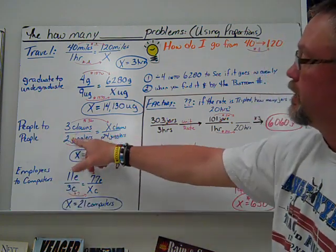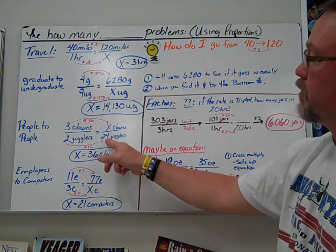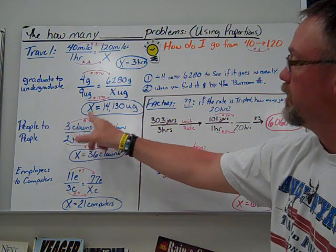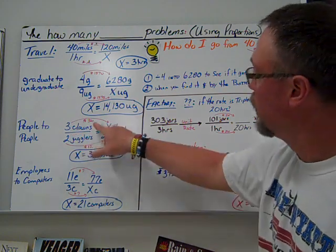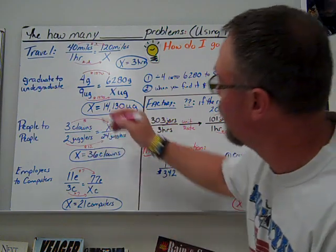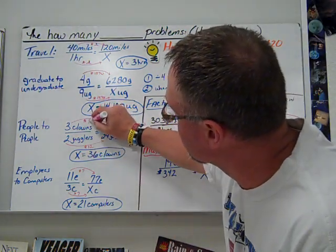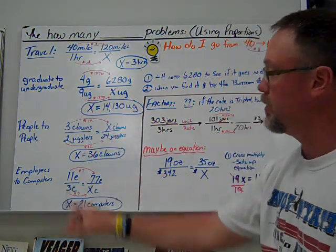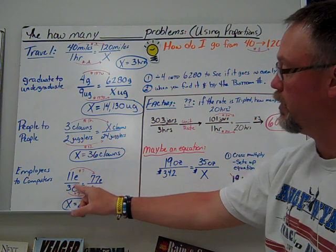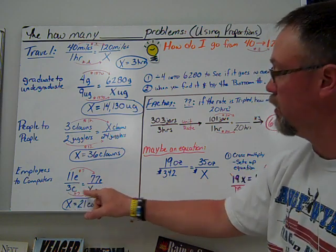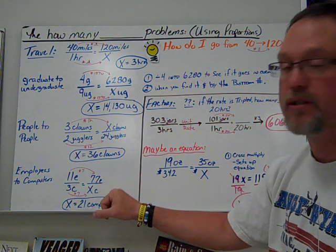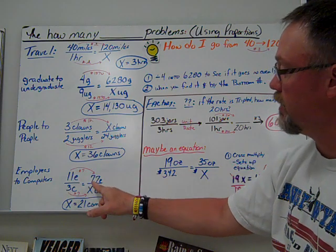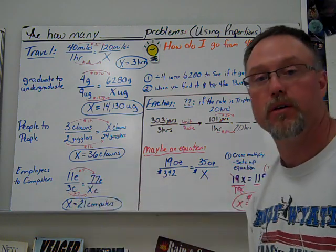People to people: 3 clowns to 2 jugglers. If we have 24 jugglers, how many clowns? 2 times 12 gives us 24, 3 times 12 gives us our answer of 36 clowns. Whenever we multiply the bottom, we multiply the top. Employees to computers: 11 employees, 3 computers as the ratio. How many computers if we have 77 employees? 11 times 7 gives us 77, 3 times 7 would give us 21 computers.